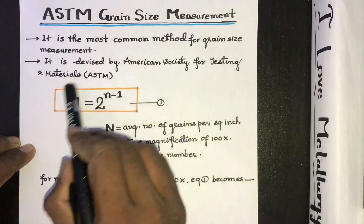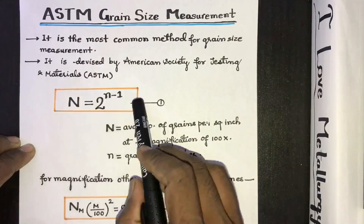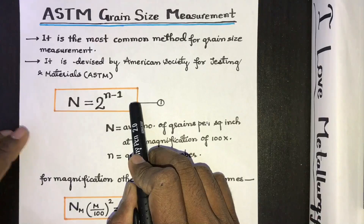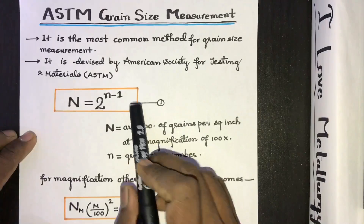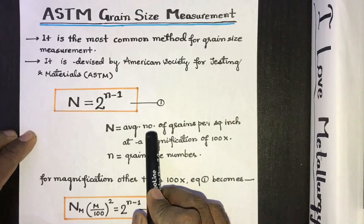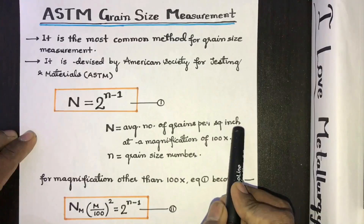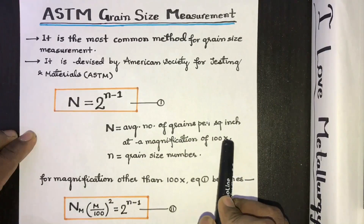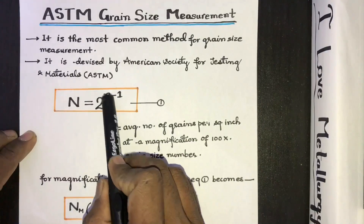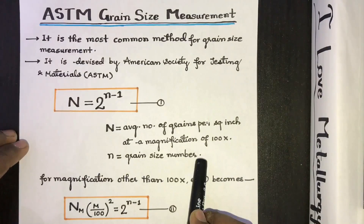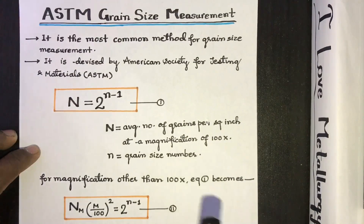This is the basic formula for grain size measurement given by the ASTM, in which capital N denotes the average number of grains per square inch at a magnification of 100, where small n is the grain size number, which ranges from 1 to 10.